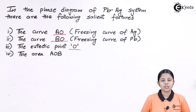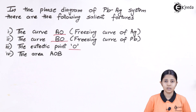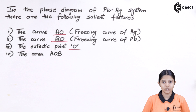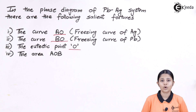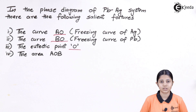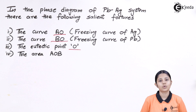In today's session we studied the lead-silver system — its components, its phases, and the application of the phase rule. We understood that the normal phase rule does not apply because it is a special condensed system, so we applied the reduced condensed phase rule. Thank you for watching. Stay tuned to Ikeda.